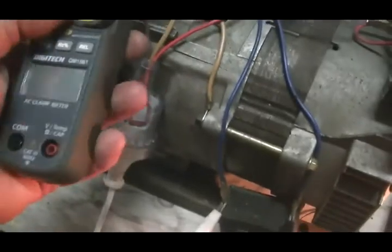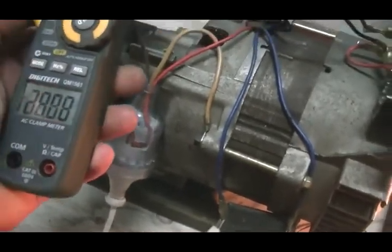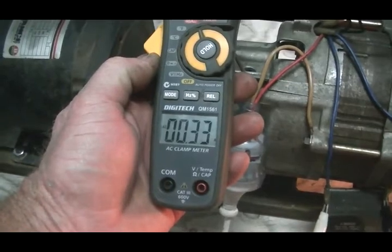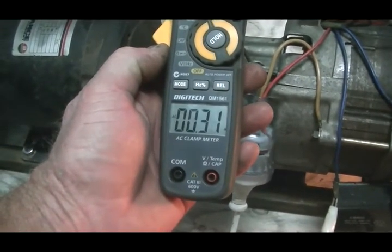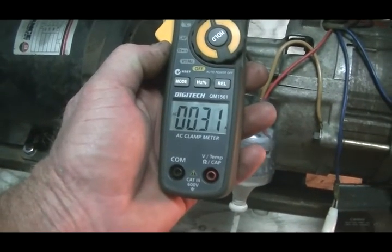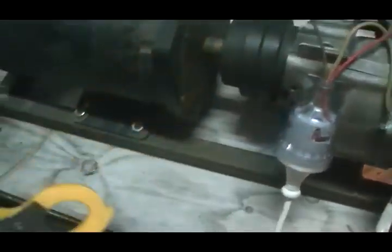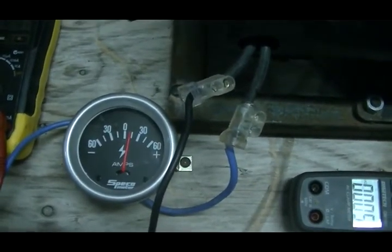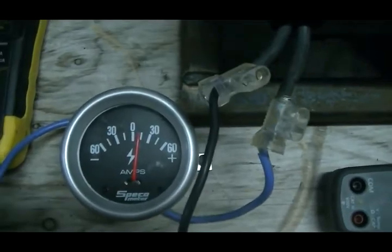199 volts. About 330 milliamps. 300 milliamps. 199 volts. And you'll see the amp gauge on our motor as it moves.